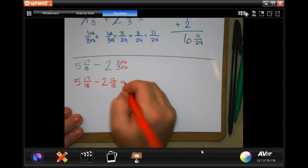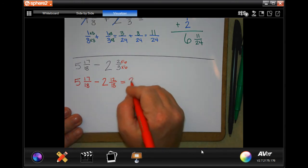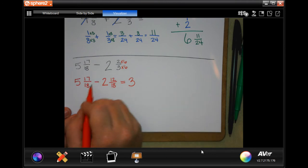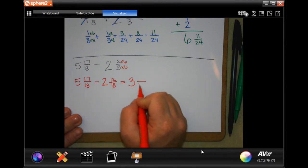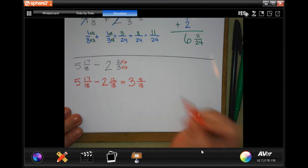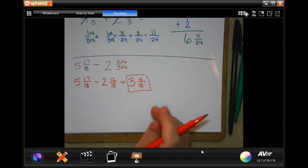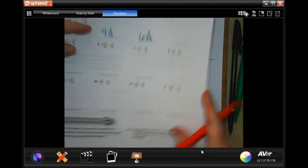So now I'm going to subtract the whole numbers first. So 5 minus 2 is 3. The denominator is going to stay the same. 17 minus 12 is 5. 5 is prime and it doesn't go into 18, so I cannot reduce it. So number 6 is 3 and 5/18.